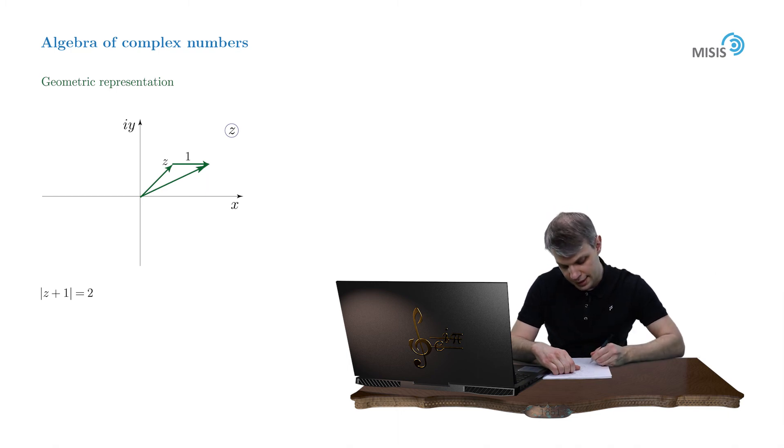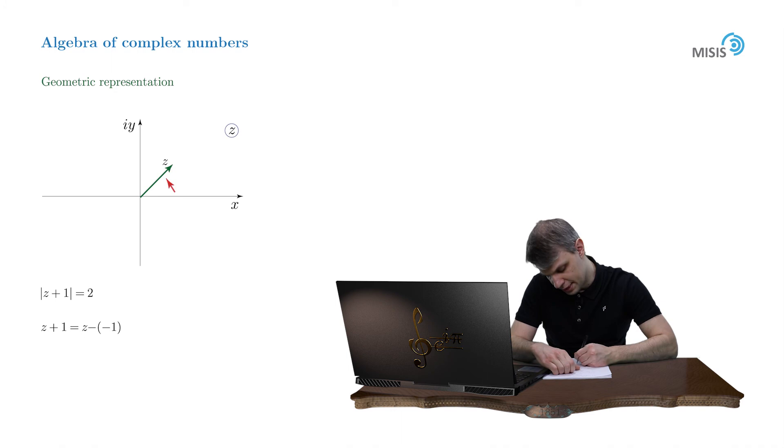For example, let's rewrite z plus 1 as z minus negative 1. And let's draw the same picture. So here is our complex number z. And here is our vector negative 1. Now it points to the left. And here is the difference of two vectors. And wherever our z complex number goes, we restore this difference by the same rule.